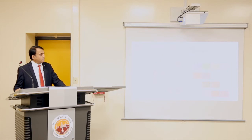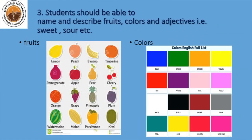Our third objective for these two weeks is that the students should be able to name and describe different fruits, and they should be able to describe their colors with different adjectives. For example, adjectives could be: it's sweet, sour, tasty, etc. They should also be able to explain different colors, for example, green, orange, yellow. And they should be able to describe different fruit by its color. For example, a lemon is yellow.